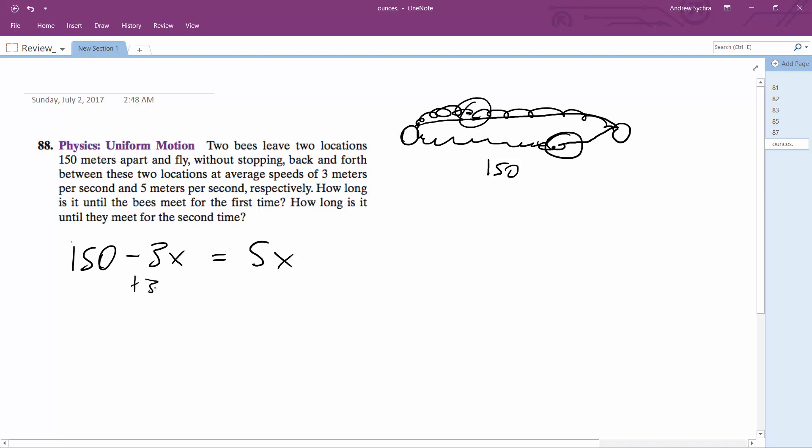All right, so add 3X, add 3X. We get 8X is equal to 150. And X is equal to 18.75 seconds.